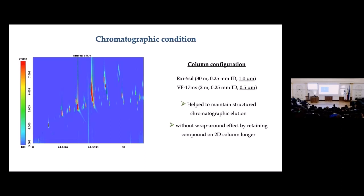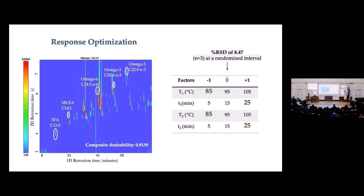For response optimization, we selected representative analytes from each individual class covering different classes. Interestingly, these analytes covered the entire range of both first dimension and second dimension retention times. The optimized conditions are highlighted on the right side, and the composite desirability achieved was 0.91 — closer to one is better — which we consider acceptable for micro-volume extraction of a biological sample.